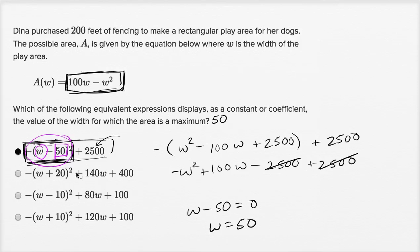These other forms of the expressions — you can algebraically expand them and they come out to be the same thing, but they don't help you make that same intuition about where the maximum value is. This form of a quadratic is called vertex form. It makes it very easy to find the vertex, which is going to be the minimum or maximum value of a function.